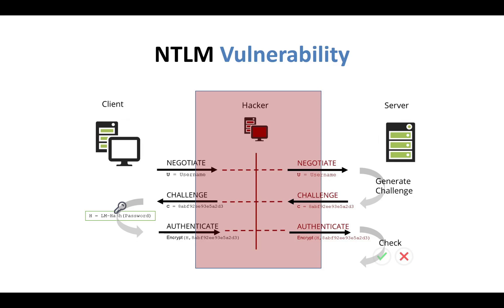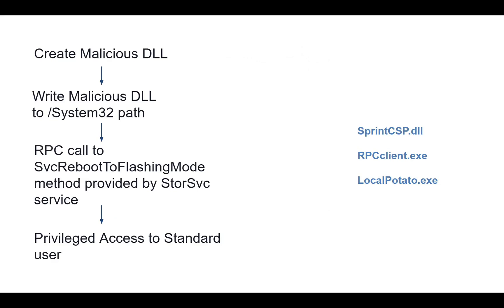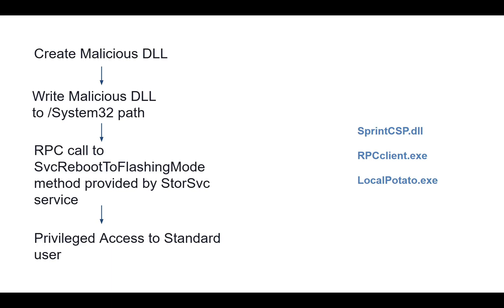Here's what we are going to do in this demonstration — this is a very important slide. First, we will create a DLL. We will write that malicious DLL to the System32 path using the Local Potato exploit, which allows us to write files to System32 with a low-privilege account.